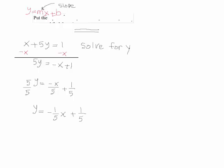So here, we know what the slope is now. The slope would be the coefficient of x, which is minus 1 fifth. And then the y-intercept, or known as b, is 1 fifth.